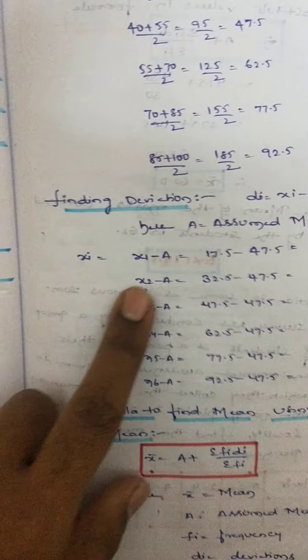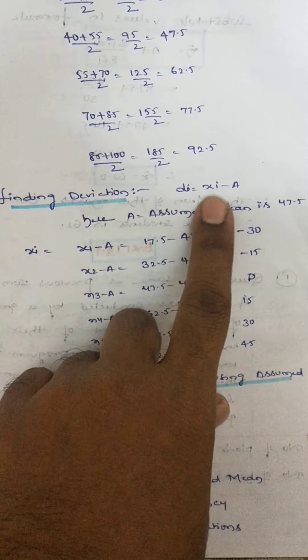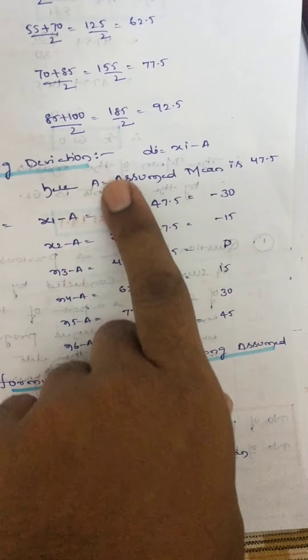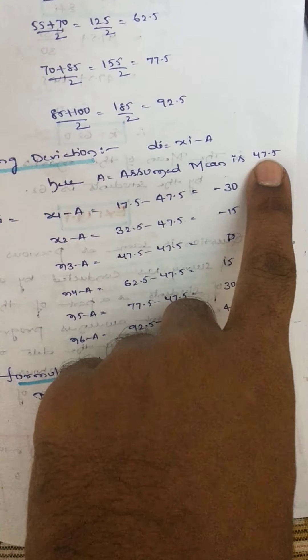The Di formula is xi minus A. Already we have taken A as 47.5. This A is common for all the values. The assumed mean is 47.5.